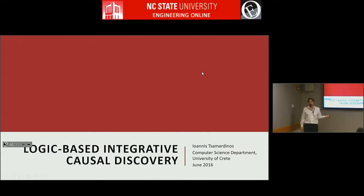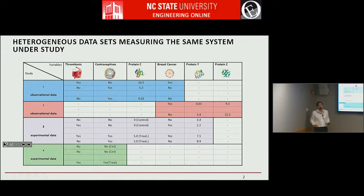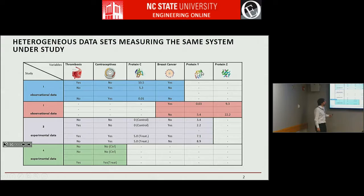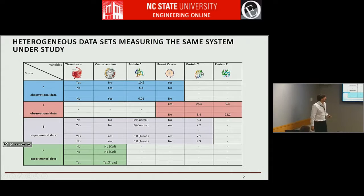Usually I'm dealing with data that come from biology, medicine, sociology, and these types of sources. They often look like two-dimensional tables where each row corresponds to one patient, one tumor, one sample, one object in general, and the columns correspond to different quantities and variables.